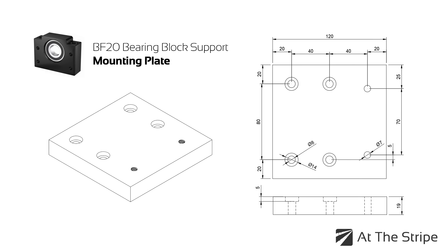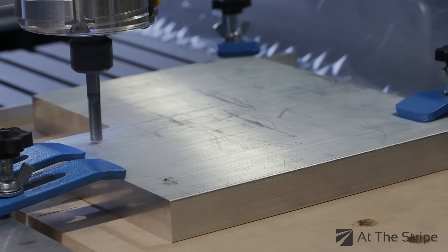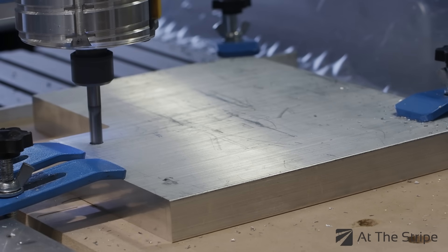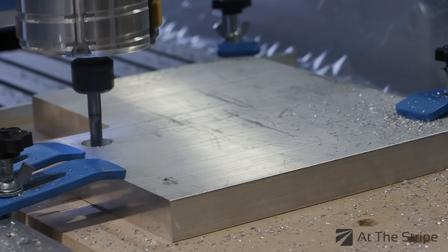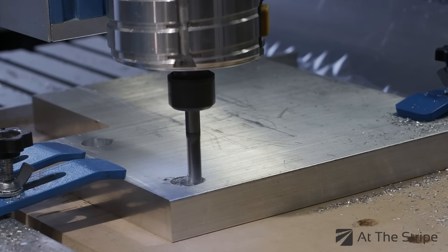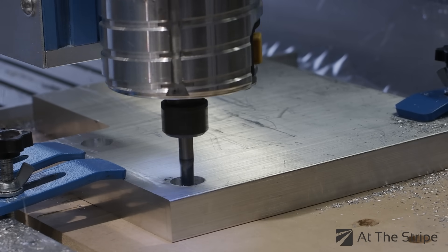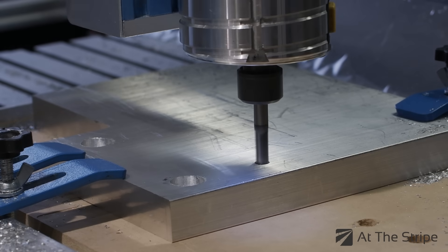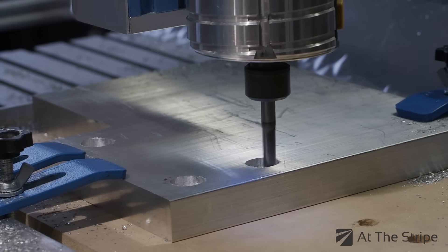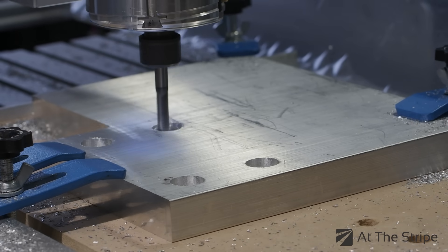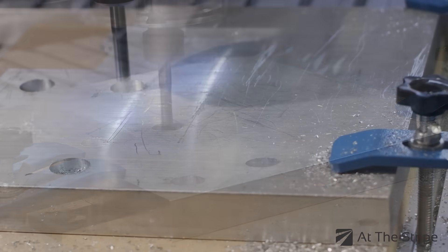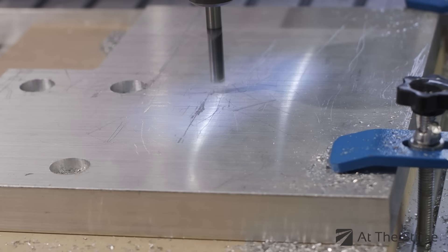In addition, the mounting plate also has four 8 millimeter holes to support M8 bolts. All right, so now what we're gonna do is we start off with making our four M8 holes that are counterbored.